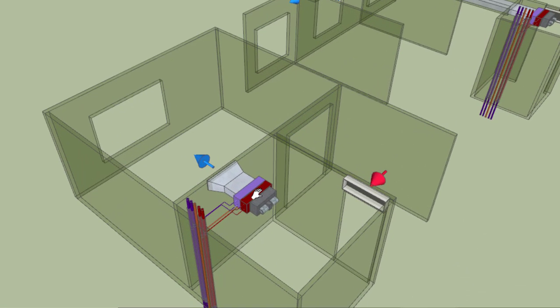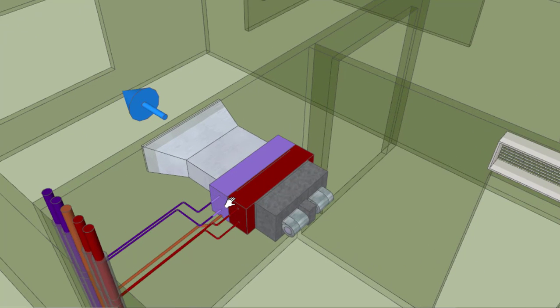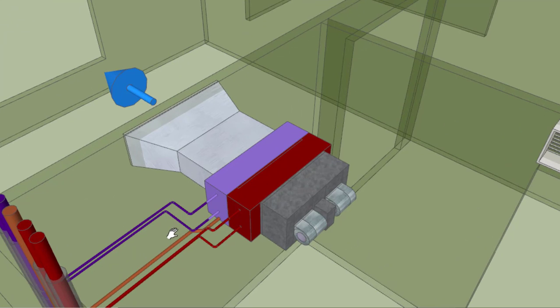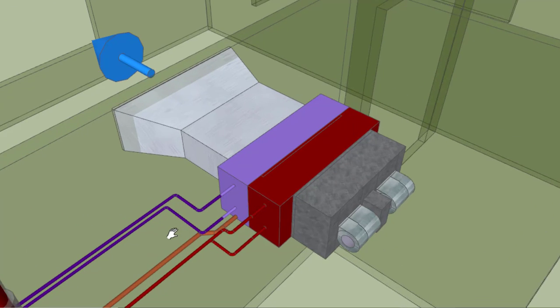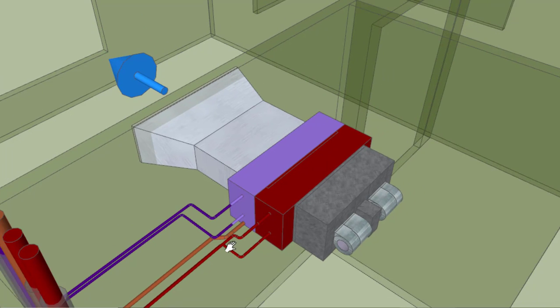First of all we have a concealed type FCU which is taking this return air and conditioning this air and supplying it to the same zone. Here as you can see we have four pipes. This is a four pipe system in which two pipes are used to take the chilled water to the cooling coil and the other two pipes are being used to take the hot water to the hot coil. These are two fans inside the FCU.